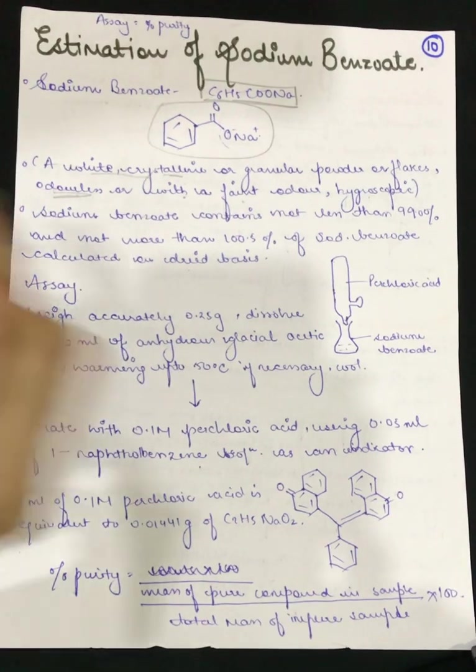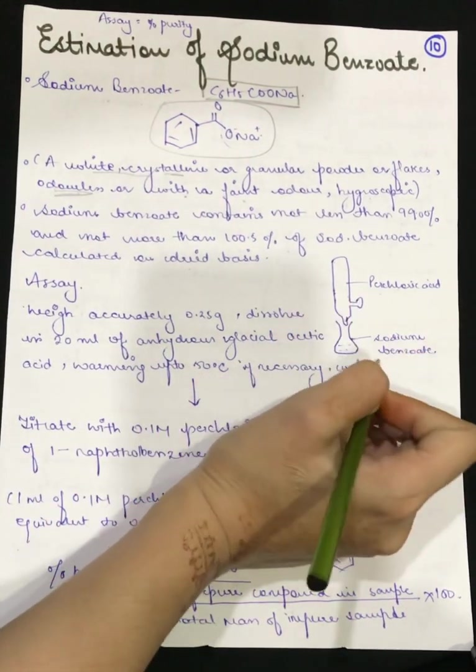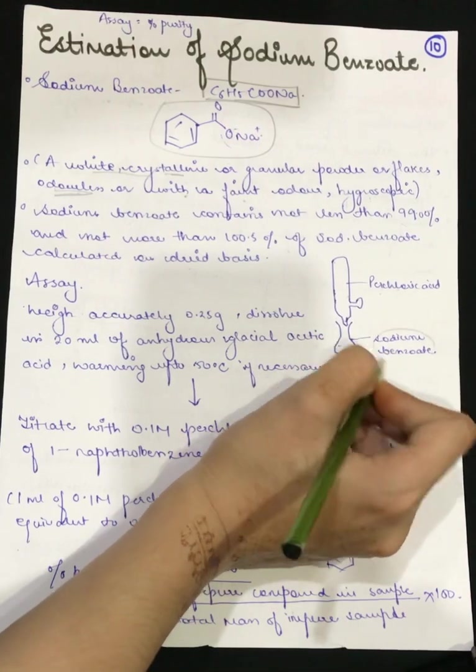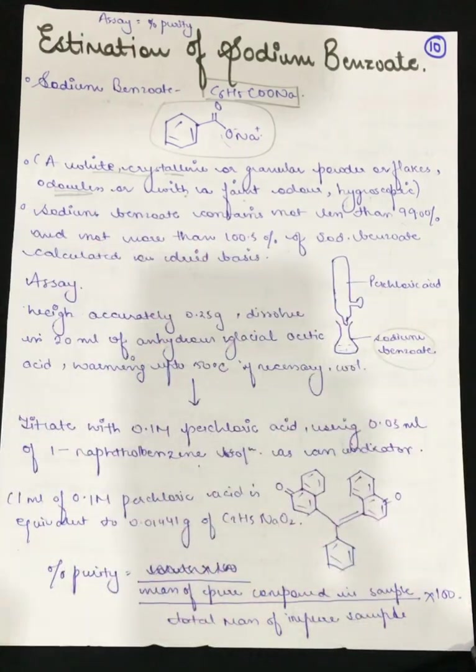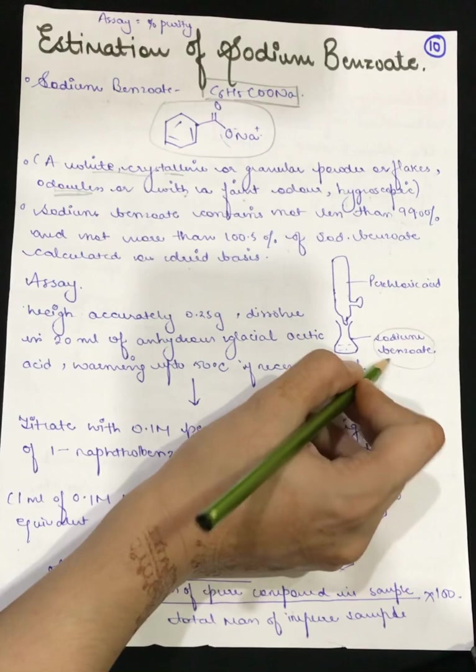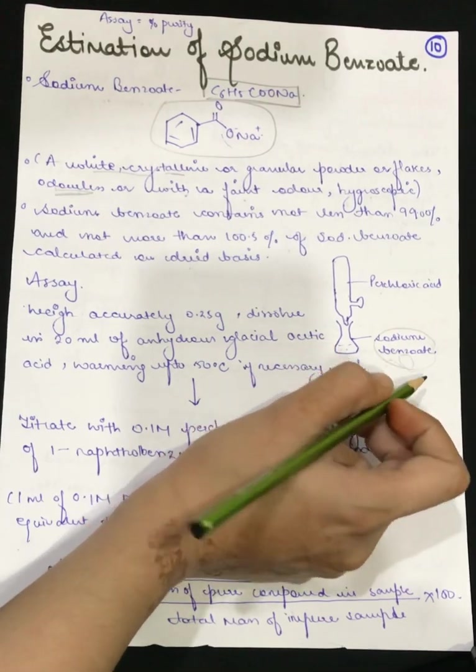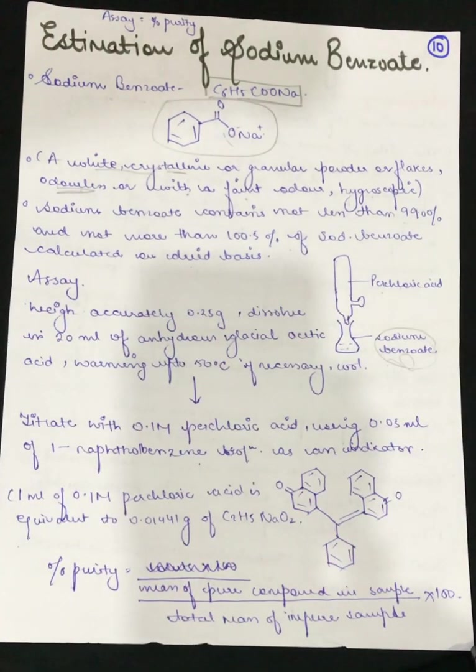What will we do in this assay? First of all, we will take perchloric acid in this assay and in the conical flask we will be having sodium benzoate. Why? Because sodium benzoate will be the analyte here since we have to estimate it.